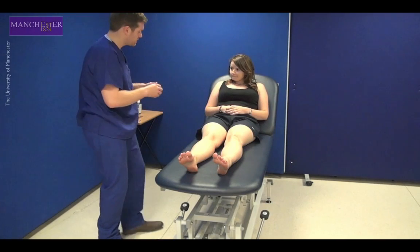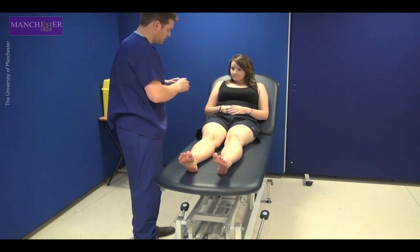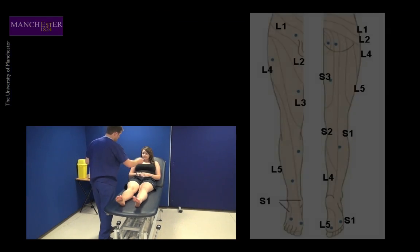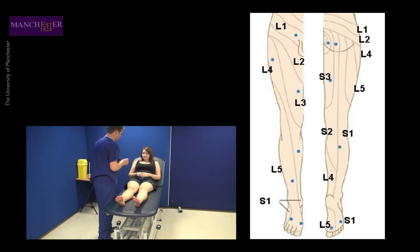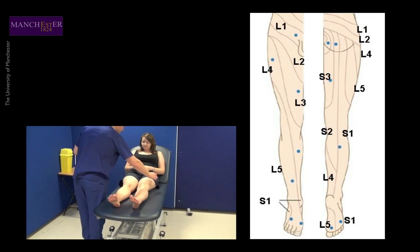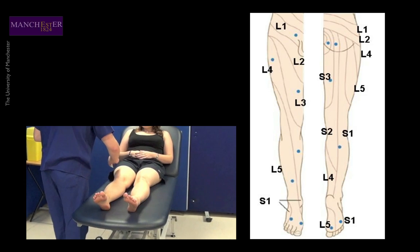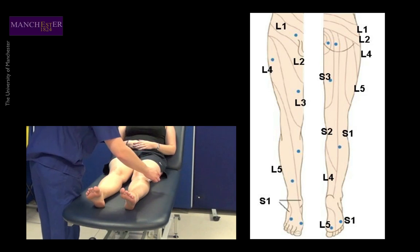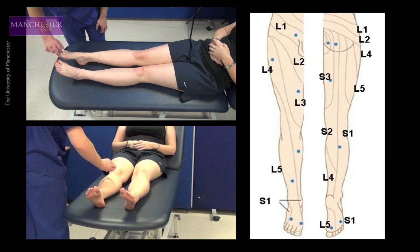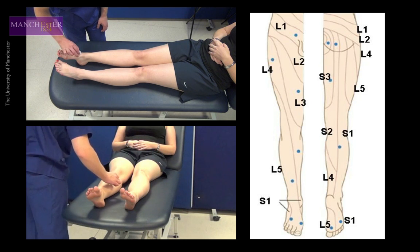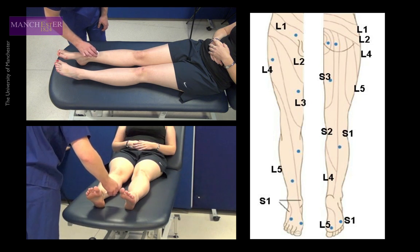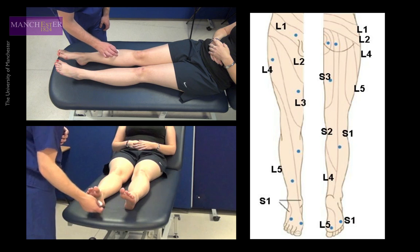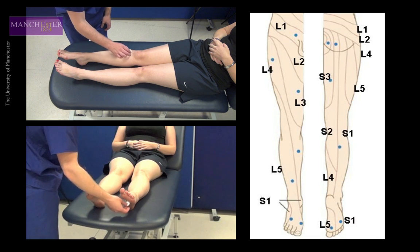Next, test sensation of the legs. Begin by testing the dermatomes for light touch. Explain to the patient that you are going to touch their legs with a piece of cotton wool and you want them to respond with 'yes' to each touch. Ask the patient to close their eyes and then dab rather than stroke the cotton wool in a dermatomal pattern. If the patient does not respond to a touch, map out the area to find whether it is a peripheral neuropathy — usually impaired sensation in a stocking shape — or a dermatomal sensory loss.